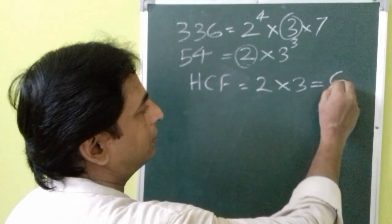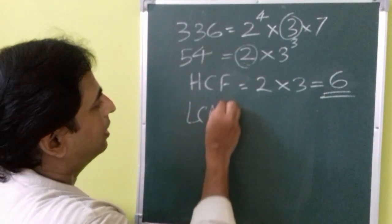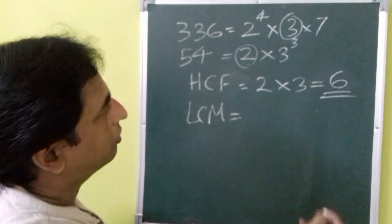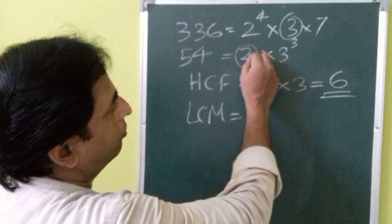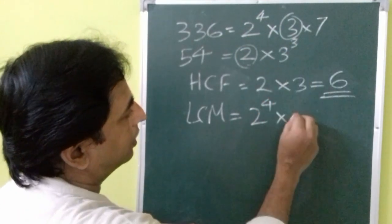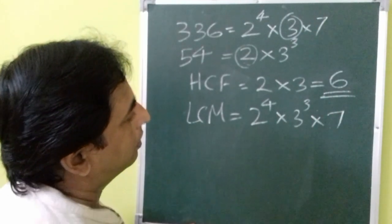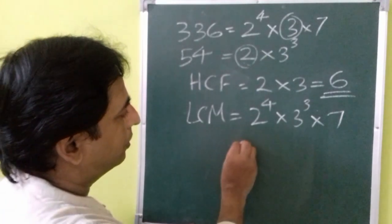The least power is 2 and 3. So the HCF will be 2 times 3 that is 6 and LCM is the highest power of all the factors. So highest power of 2 is 2 raised to 4 and highest power of 3 is 3 raised to 3 and 7 also need to be multiplied with this.